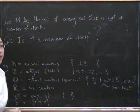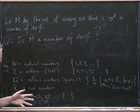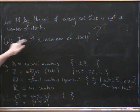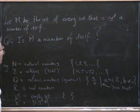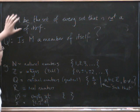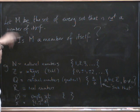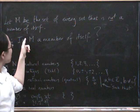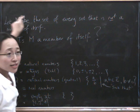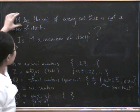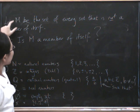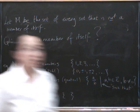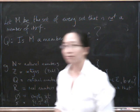So M is the set containing every set that is not a member of itself. Is M a member of itself? So is M a member of this set? Well, the things in here are precisely those things not a member of itself. So it can only be in here if it's not a member of itself. But if it's in there, then it is a member of itself. Because this is M. So if it is a member of itself, that means it isn't a member of itself. But if it isn't a member of itself, then it is a member of itself. What's going on?